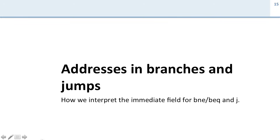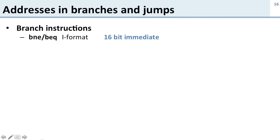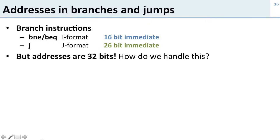Now let's talk about addresses in branches and jumps — specifically how we use the immediate fields when looking at branch not equal, branch equal, and jump instructions. In MIPS, branch not equal and branch equal use the I-format, which gives a 16-bit immediate, and jump uses the J-format, giving a 26-bit immediate. But our addresses are 32 bits, so the question is how do we combine these immediates to get the new 32-bit instruction address.